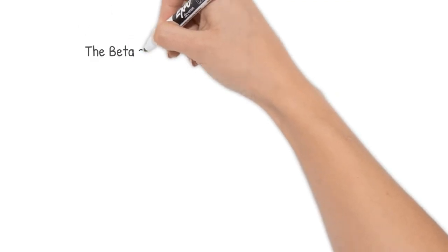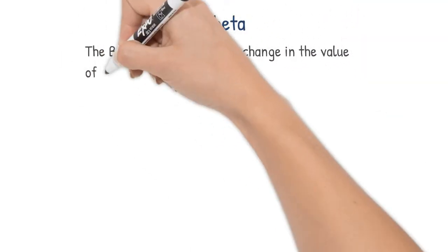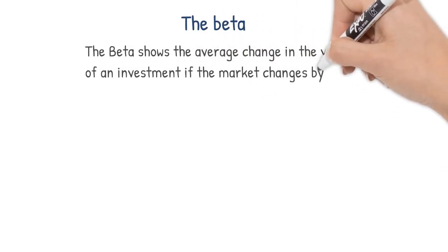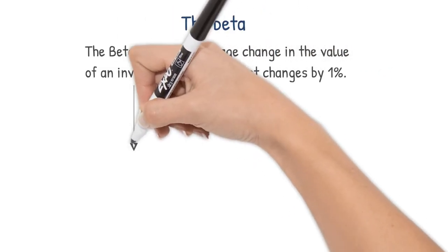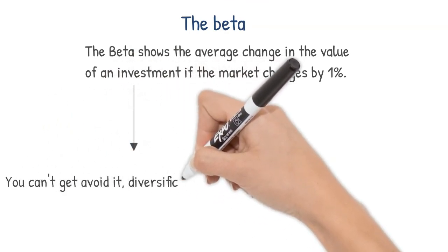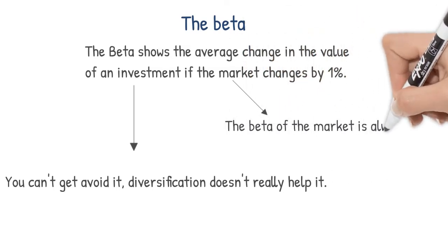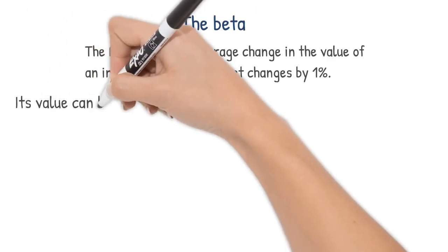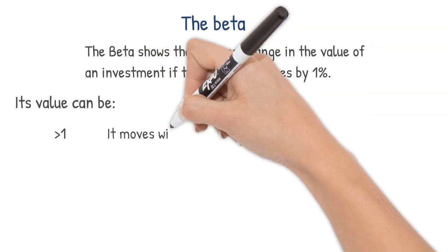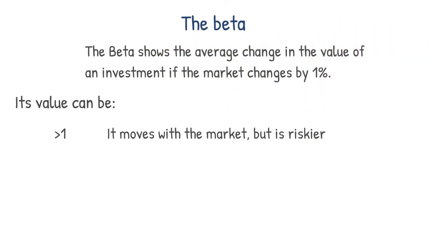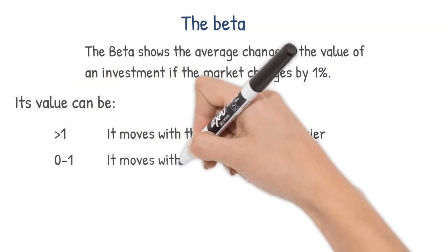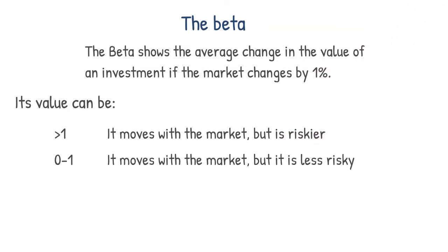Beta is also a measure. Beta shows the average change in the value of an investment if the market changes by 1%. In other words, as long as you can reduce individual risk by diversification, the risk expressed by beta must be borne by all investors. The beta of each investment is always relative to the market, so the market beta is always 1, after all the change in value of the market is then compared to itself. The value of beta can be greater than 1, in which case the movement of your investment relative to the market is greater. In other words, the investment has a higher risk than the average. If beta takes a value between 0 and 1, the investment is risky but below the level of market risk.